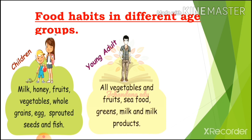Young adults eat all types of vegetables and fruits. They also eat foods like fish, crab, and prawn, as well as greens, milk products, and all types of seeds.